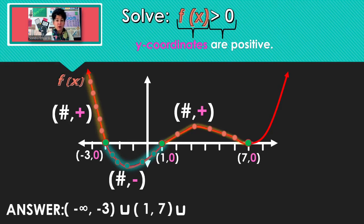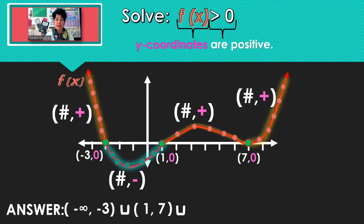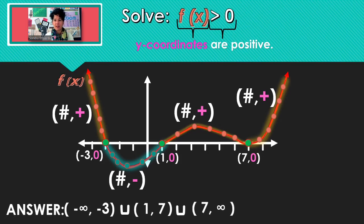Continuing to look for more solutions — after that x-intercept, all of the points along there have positive y-coordinates. So all of the x's after 7 are going to generate positive y-coordinates, not including 7, because at 7 the y-coordinate was 0. So, parentheses, 7 through infinity. All right.